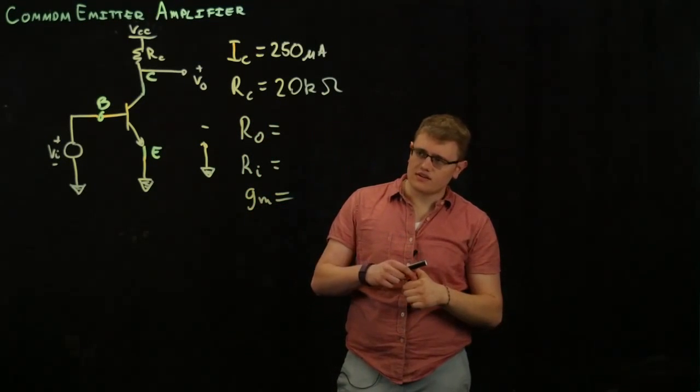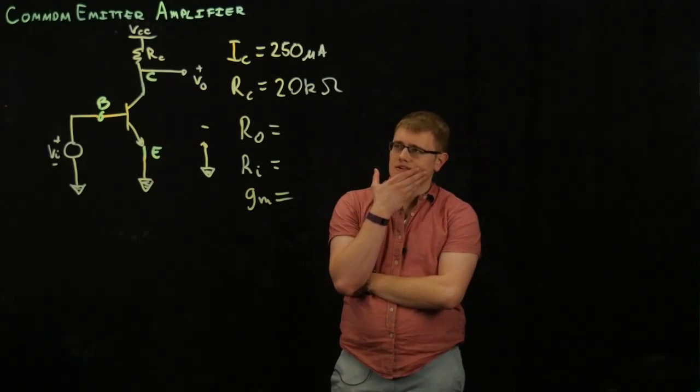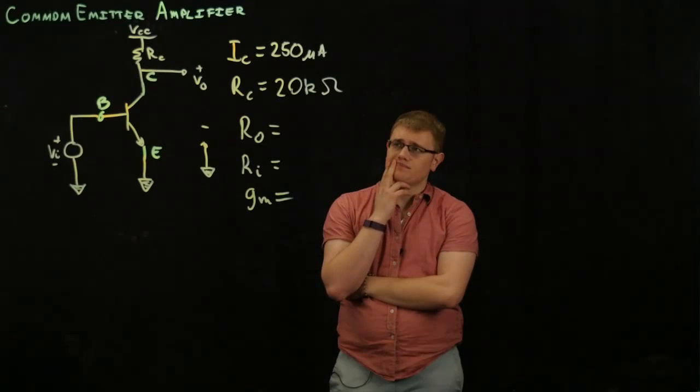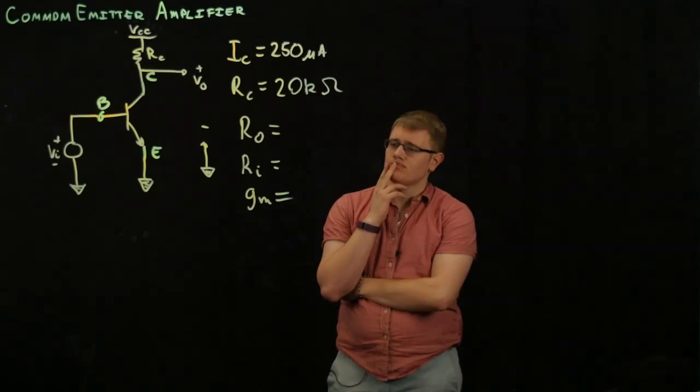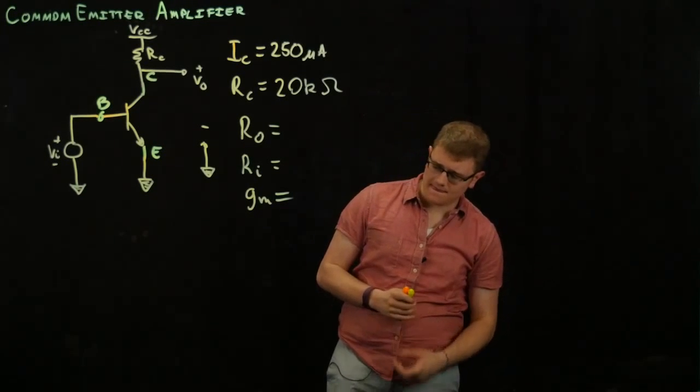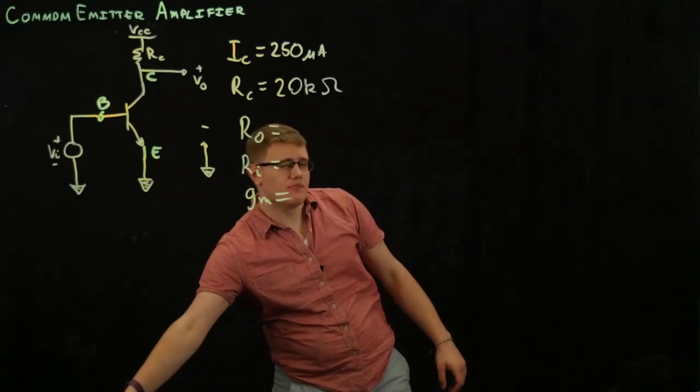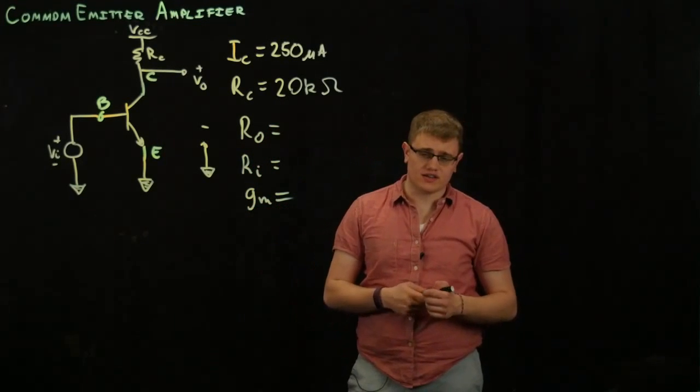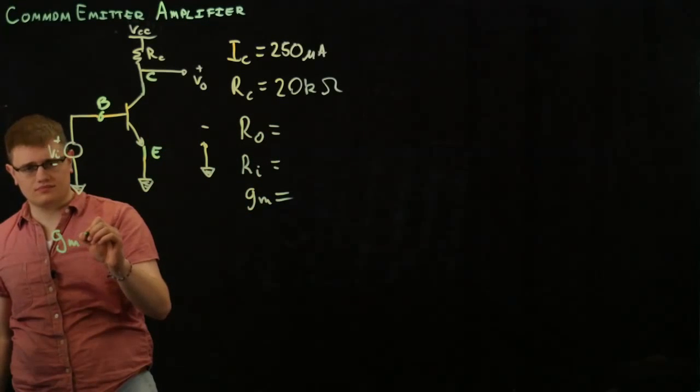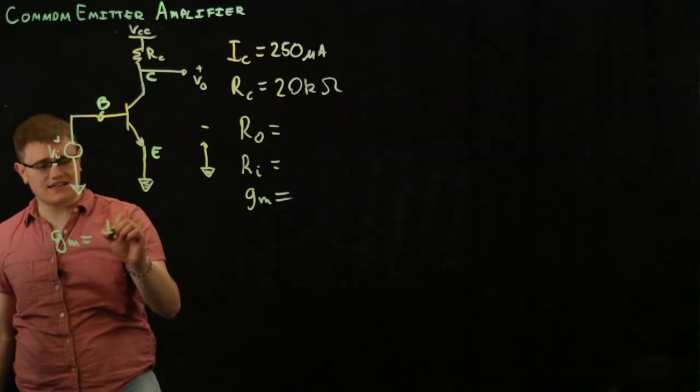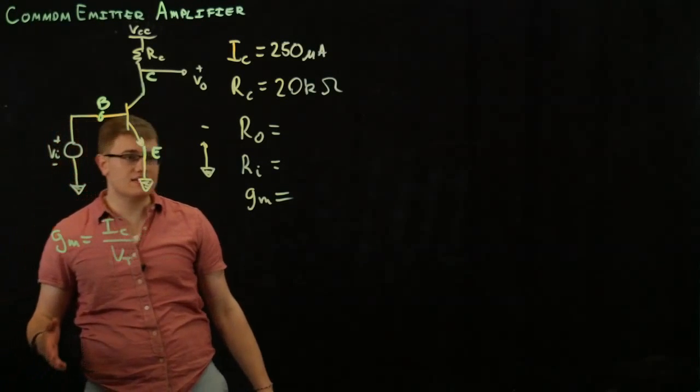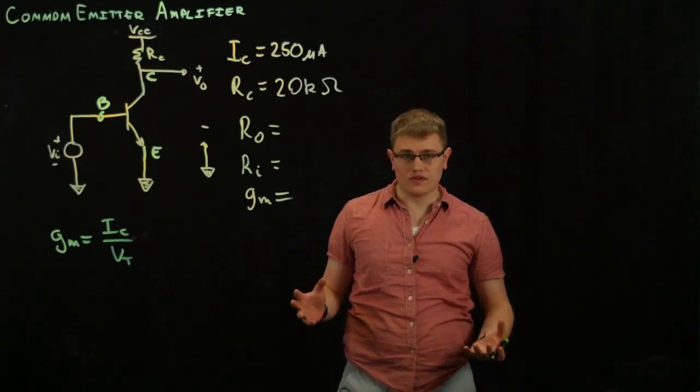Okay. Now, this looks like a fun problem. Where should we start, though? How about the transconductance? Now, do you guys remember the equation for transconductance? GM is IC over VT. IC being the collector current, VT being thermal voltage.